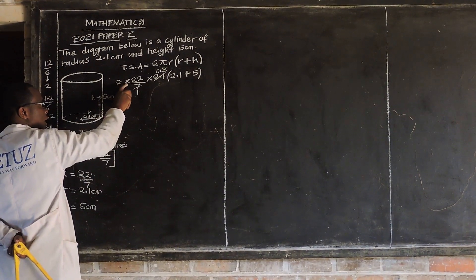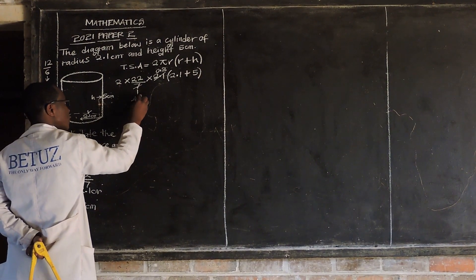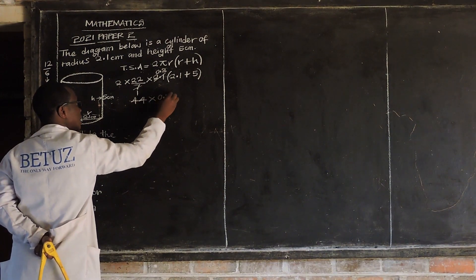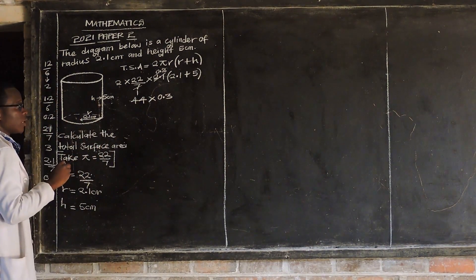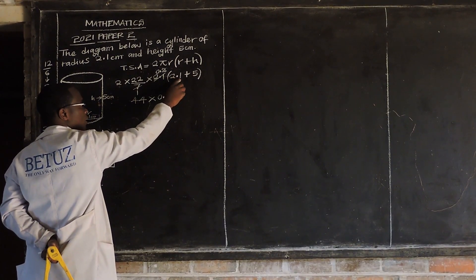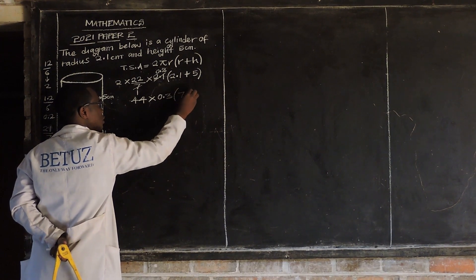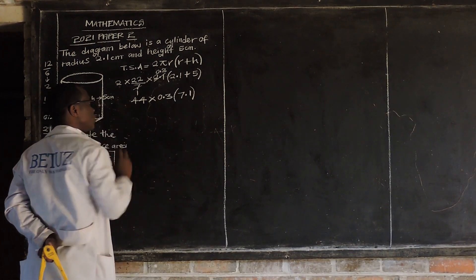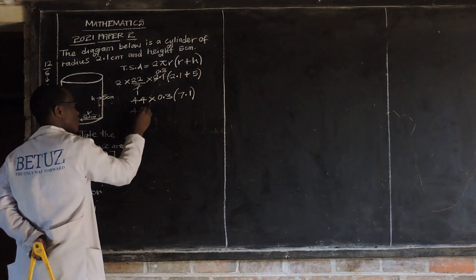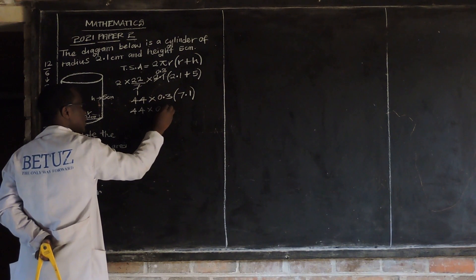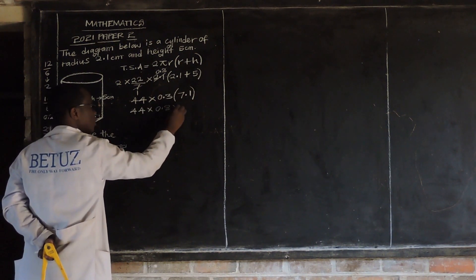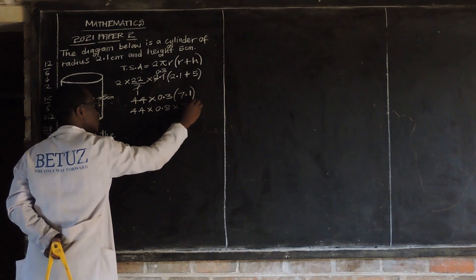So we multiply: 2 times 22 gets 44. Times 0.3. Then we can add inside the brackets: 2.1 plus 5 gives 7.1. So what we have is 44 multiplied by 0.3, then multiplied by 7.1.